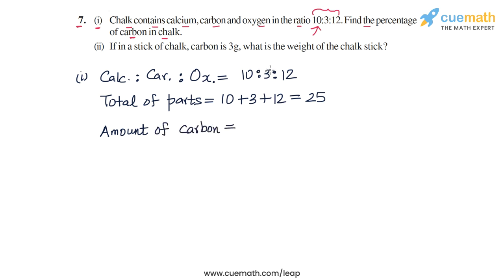The amount of carbon as a fraction of the whole will simply be the part in the ratio corresponding to carbon, which is 3, divided by the total of parts, which is 25. So the amount of carbon will be 3/25 in fraction form, or we can convert it to percentage form: 3/25 × 100. Now 100/25 is 4, and 3 × 4 is 12, so this equals 12%. The percentage of carbon in chalk is 12%. This is the answer for the first part.